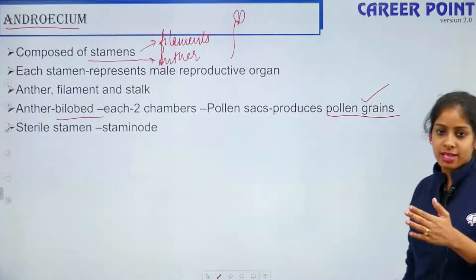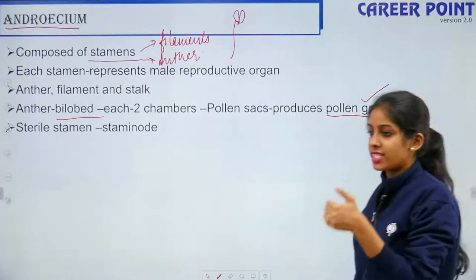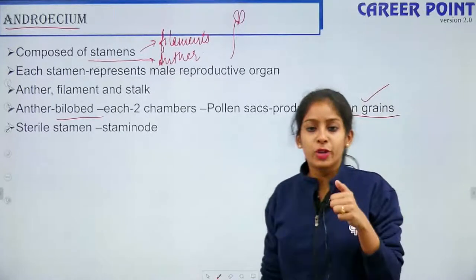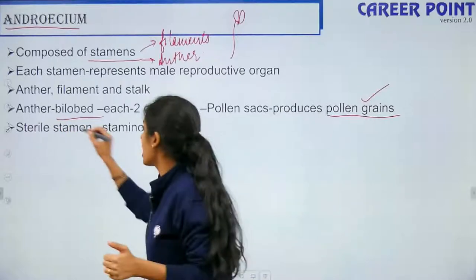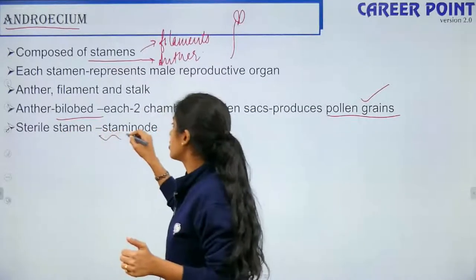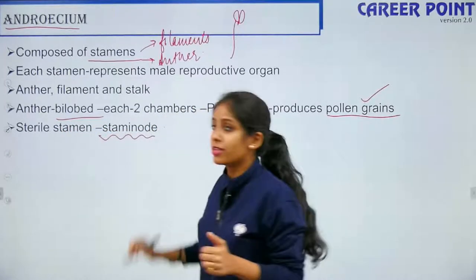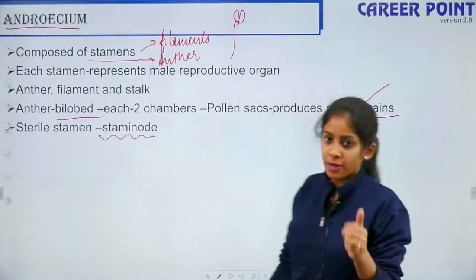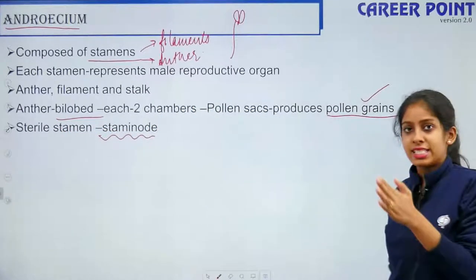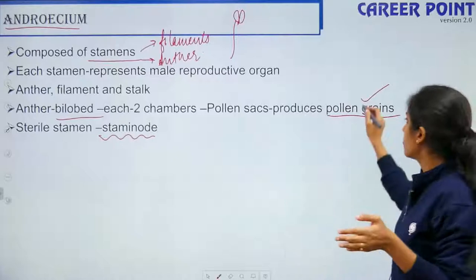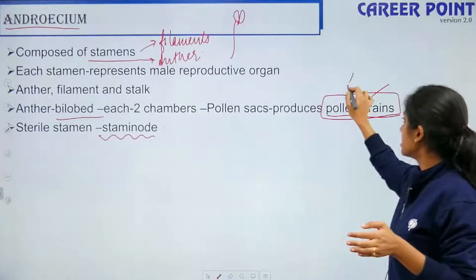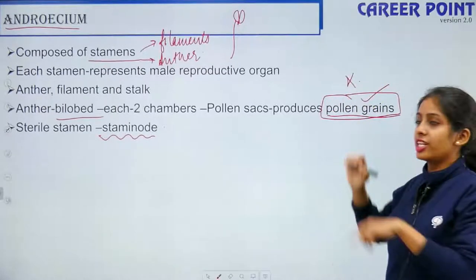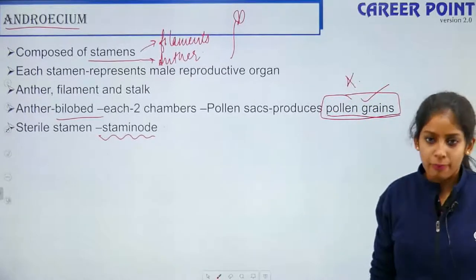When a stamen cannot produce pollen grains, it is known as a sterile stamen and it is known as a staminode.